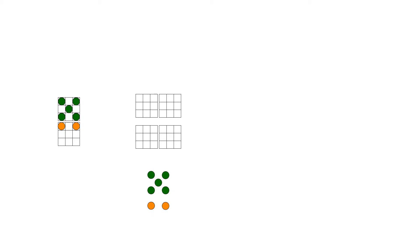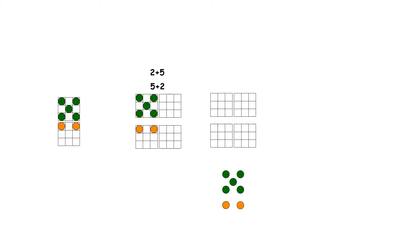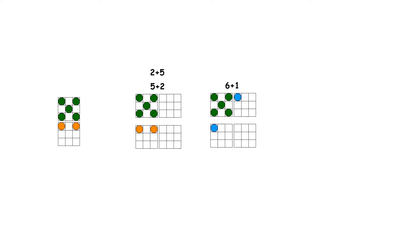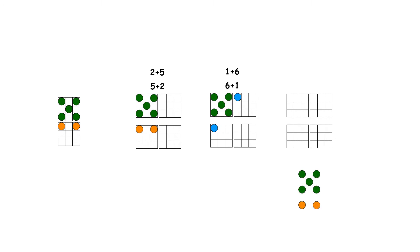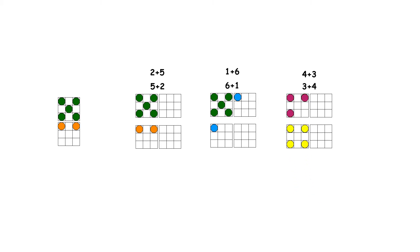Now let's look at 7. 7 is the same as 5 and 2, and 2 and 5. 7 is the same as 6 and 1, and 1 and 6. 7 is the same as 3 and 4, and 4 and 3.